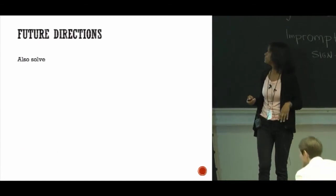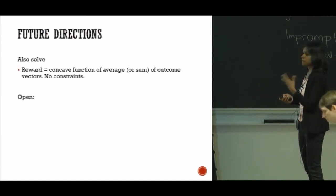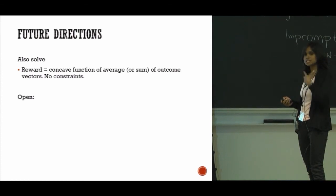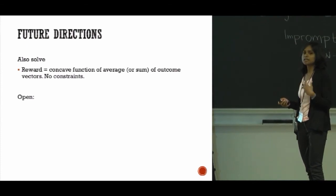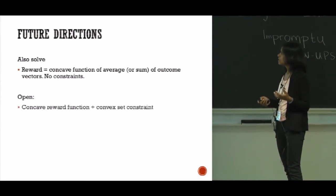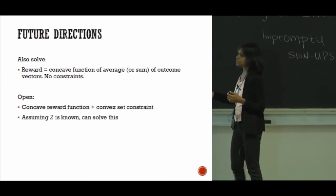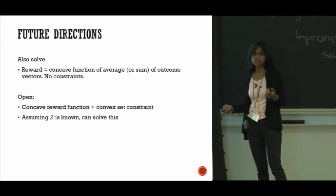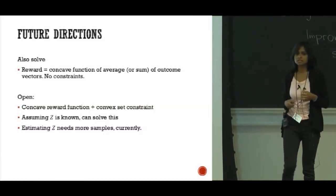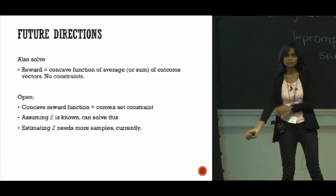Just to mention a few future directions: in our paper we already extend this to not just sum of rewards but concave function of the sum of rewards. But it is still open to have concave function of sum of rewards as well as convex constraints. And there the main difficulty is actually in estimating z, this multiplier. Thank you.